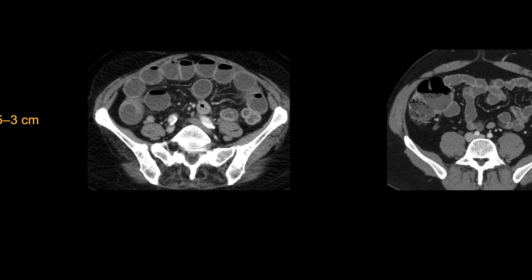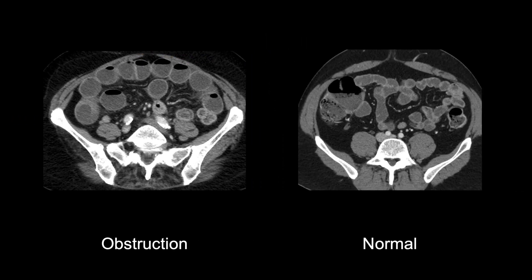It is helpful to remember that normal small bowel may have some fluid or even a slightly dilated loop or two, but normal small bowel does not have that tense, crowded appearance of many dilated loops as seen with an obstruction.